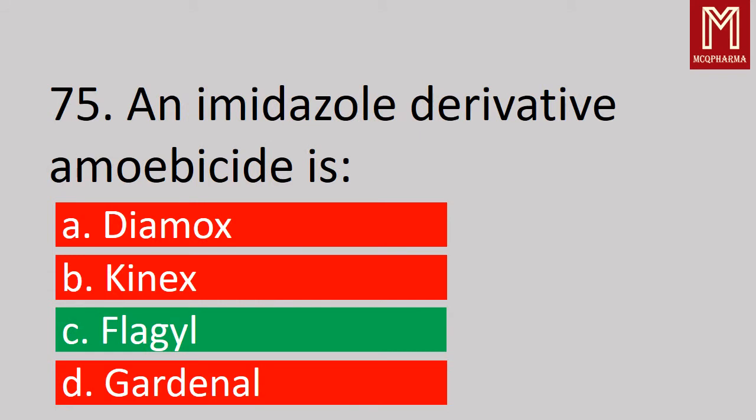Next, an imidazole derivative amoebicide is — correct answer, Option C: Flagyl. Flagyl is the brand name of metronidazole. It is a nitro-imidazole derivative and is an antibiotic and antiprotozoal medication.